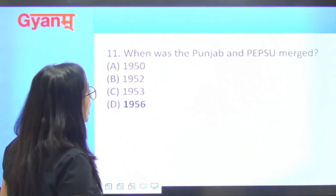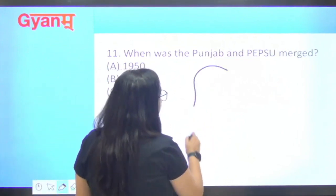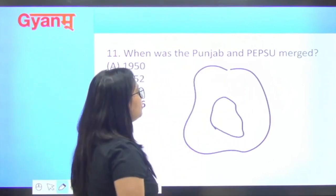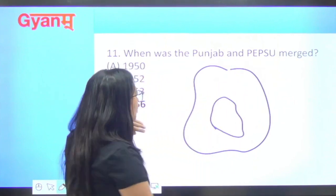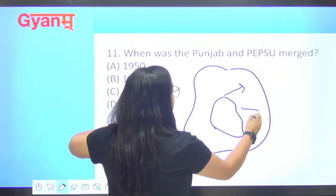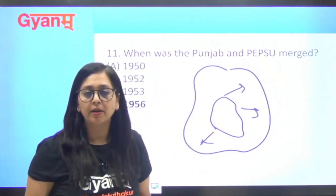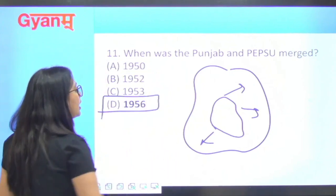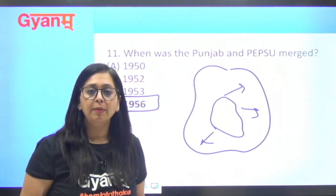Next question: when was Punjab and PEPSU merged? After partition, a separate state called PEPSU — Patiala and East Punjab States Union — was formed, but it was later merged into Punjab. PEPSU was merged into Punjab in 1956.